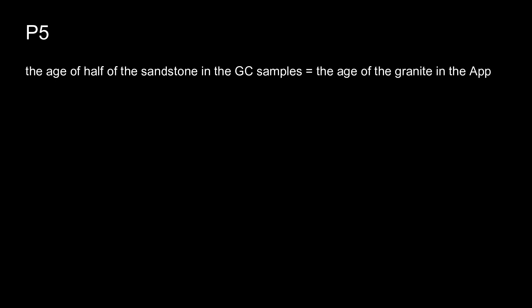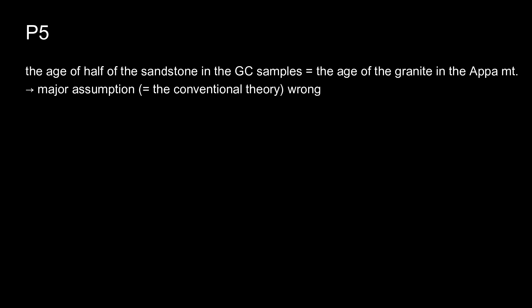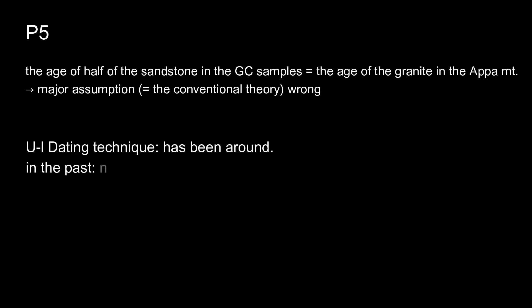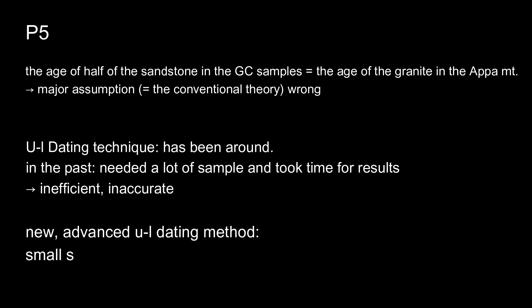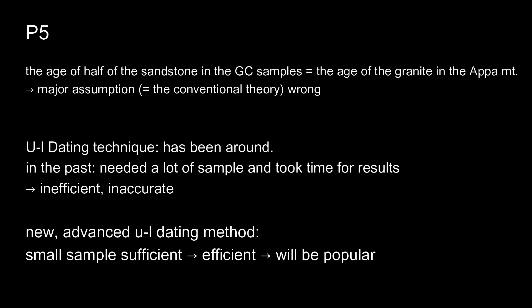Uranium-lead dating was used to establish that half of the Grand Canyon sandstone was formed at the same time as the granite in the Appalachian Mountains, disproving a major assumption about the Grand Canyon. Uranium-lead dating has been around for a while, but until recently it required studying many individual grains, which took a long time and wasn't very efficient or accurate. But technical advances have cut down on the number of grains needed, so you get results faster. Paragraph 5 is about why uranium-lead dating was not popular in the past but is now gaining popularity — it used to be inefficient and inaccurate, but now it is efficient.